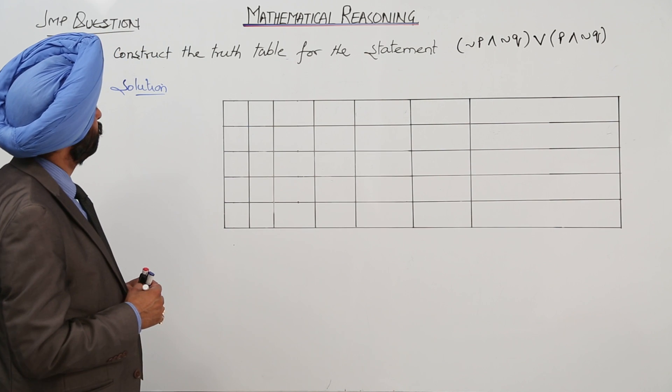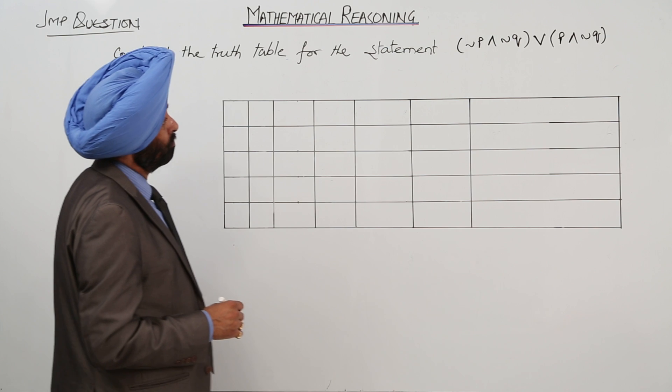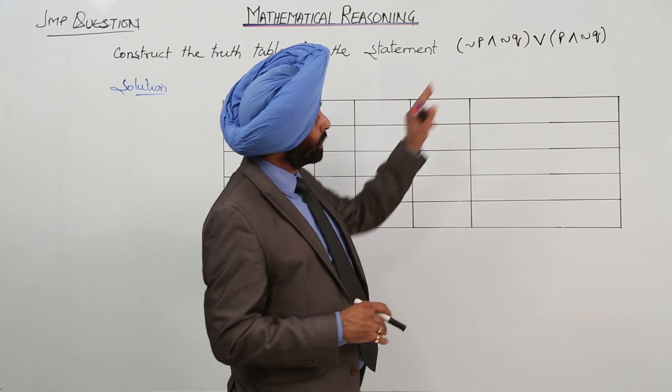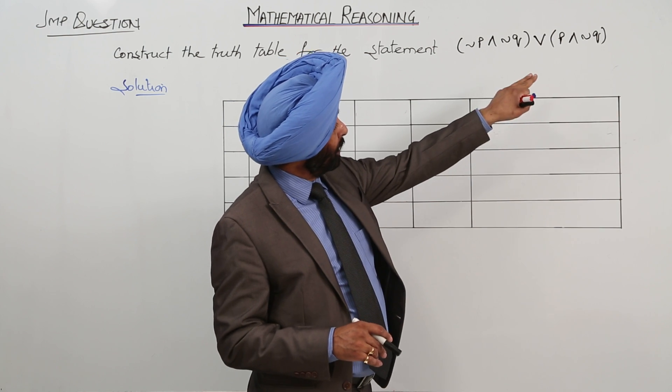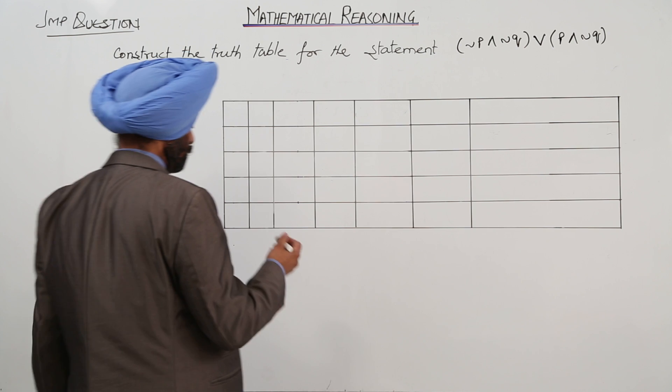Now let's construct the truth table for the statement negation of P and negation of Q, and the second bracket we are having P and negation of Q, and in between we are having or.